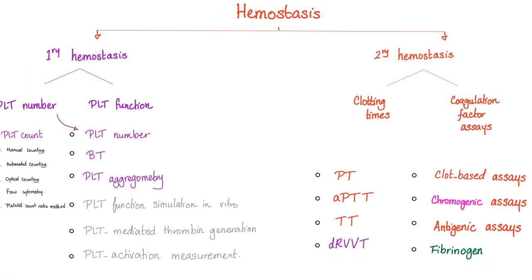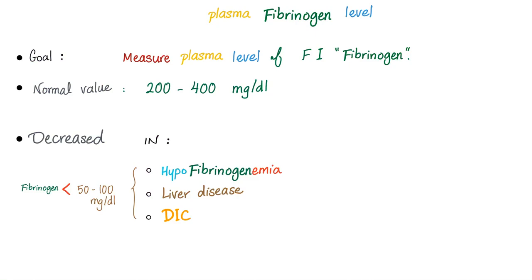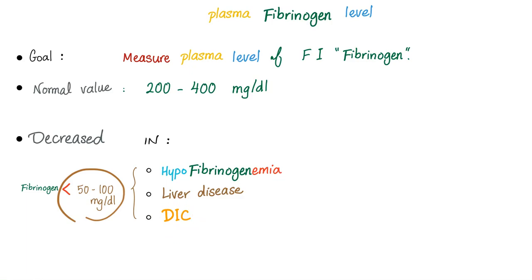Serum fibrinogen level measures plasma factor 1 (fibrinogen). Normal value is 200–400 mg/dL. Worry when it drops below 50–100 mg/dL — indicating hypofibrinogenemia. Causes include liver disease (decreased synthesis) and DIC (increased consumption of fibrinogen).